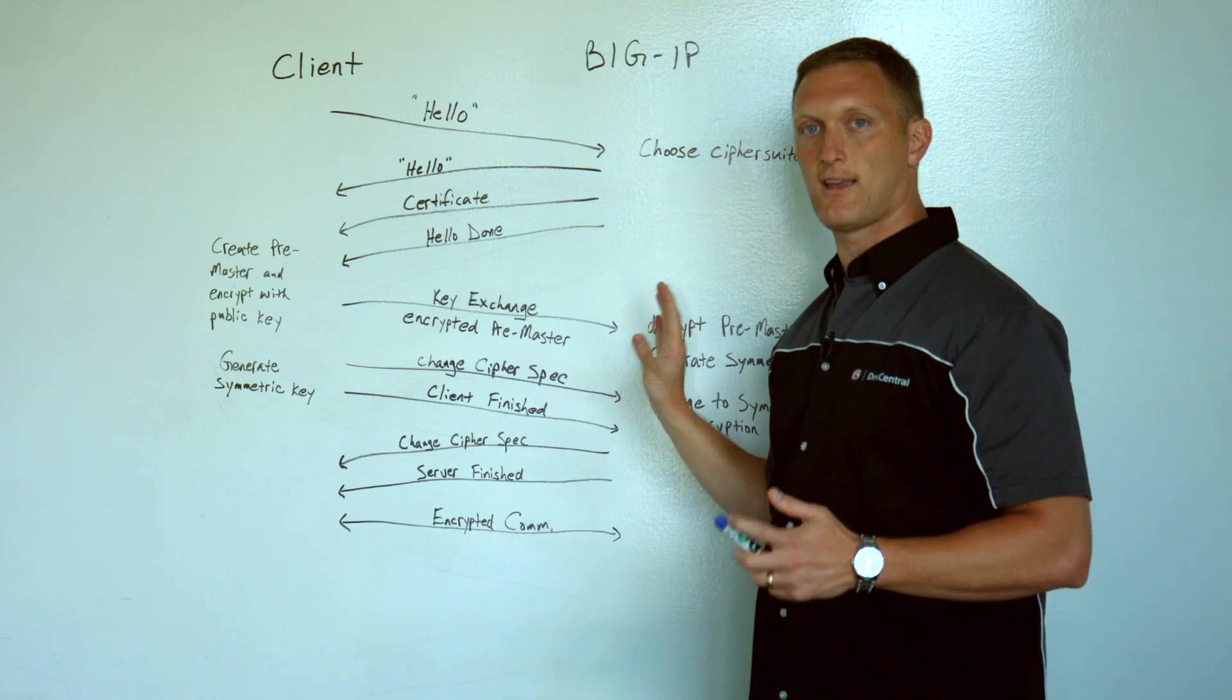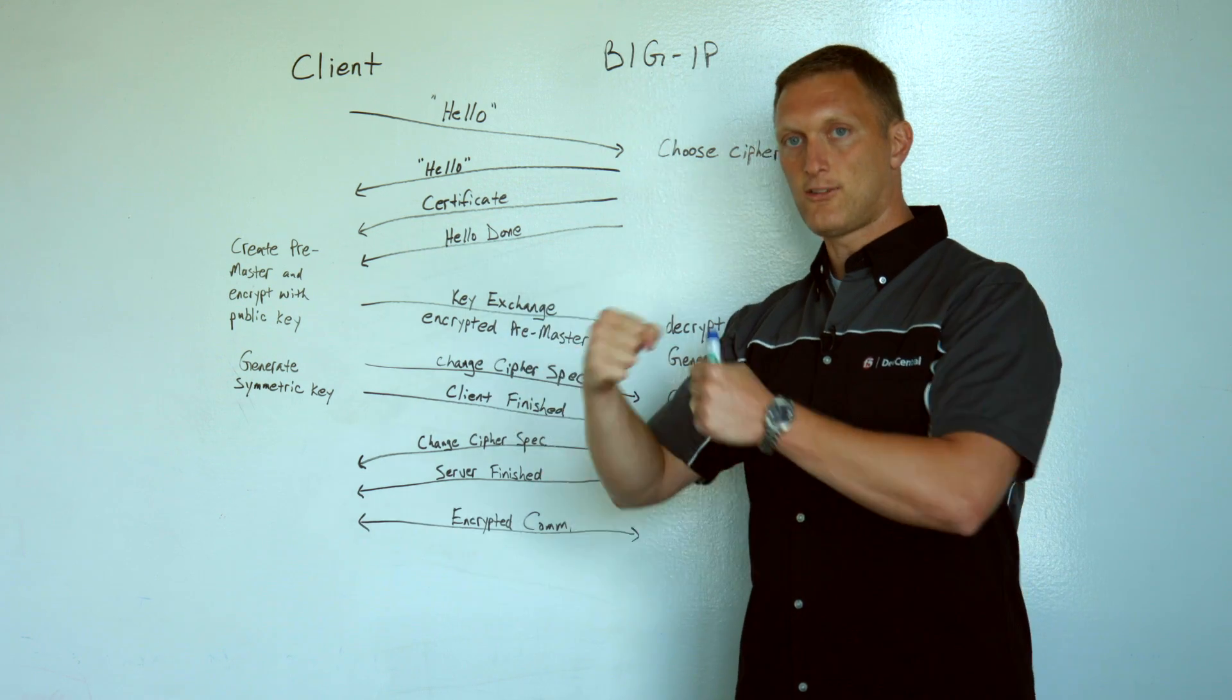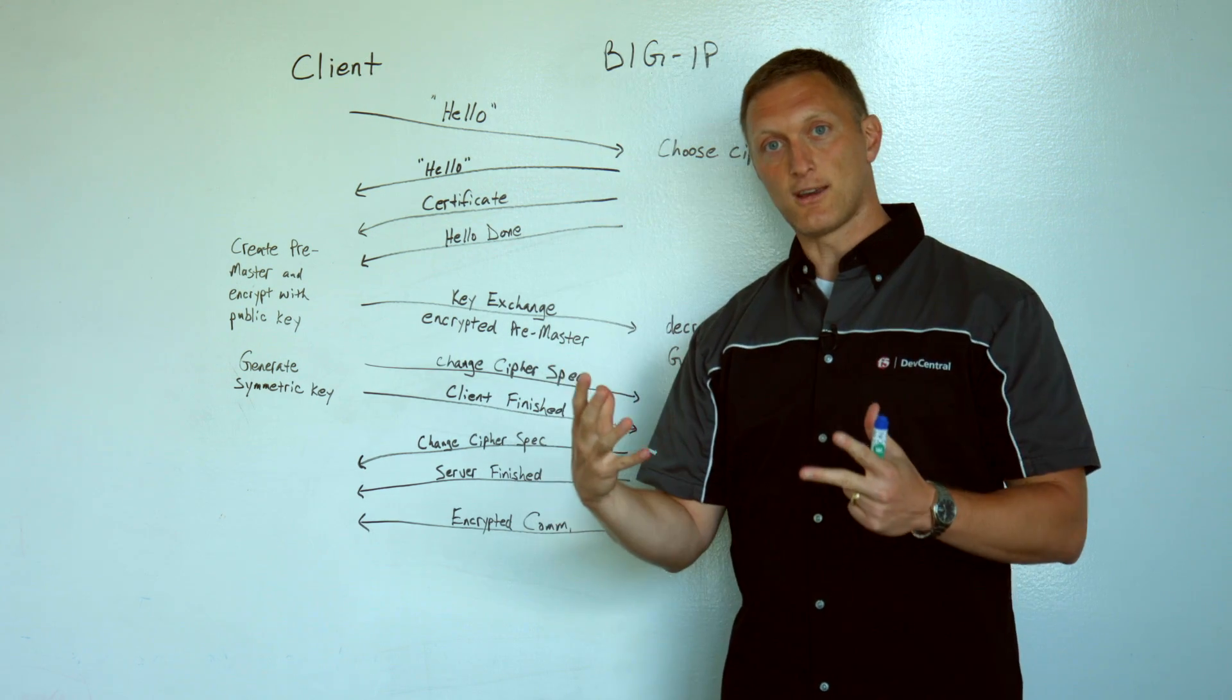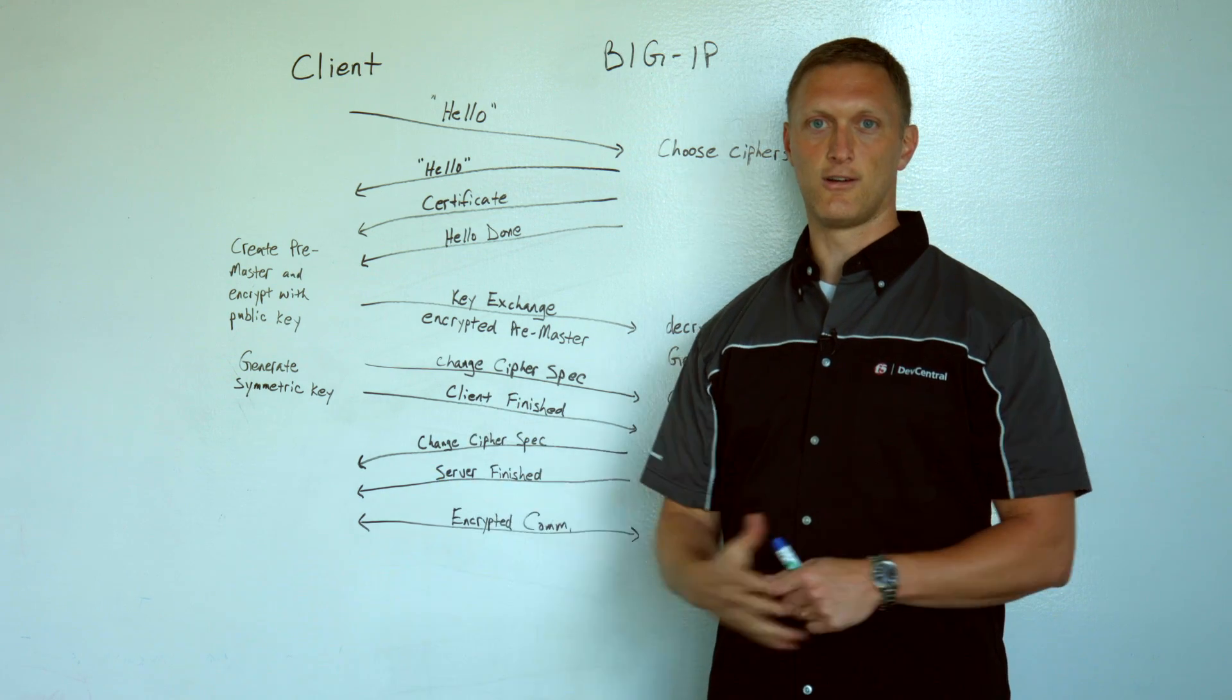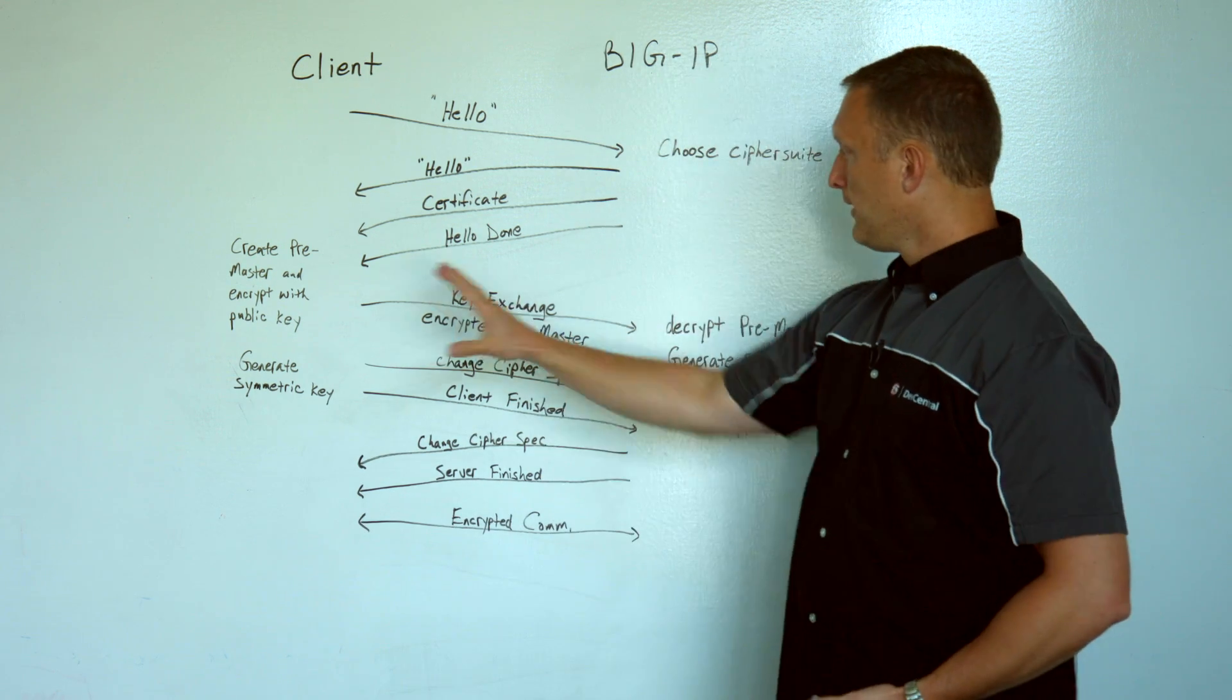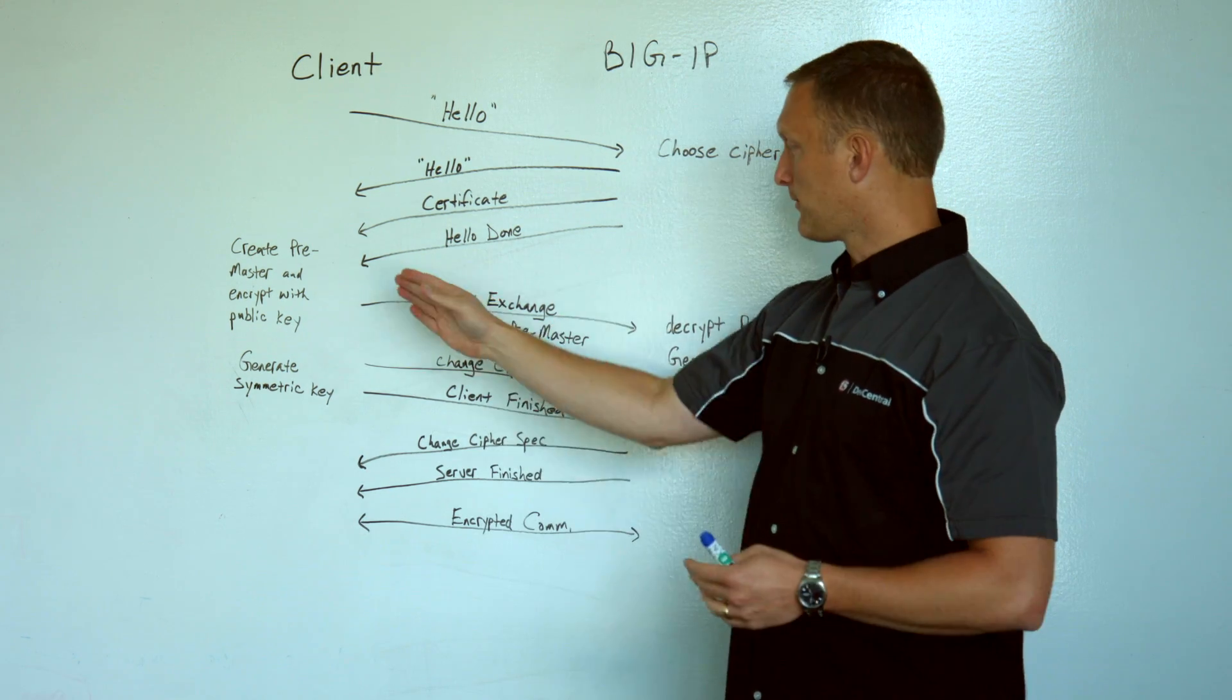What this is designed to do is establish ultimately a shared session key, a shared symmetric key that can be used between the client and the server. The reason you want to establish a symmetric key is because symmetric encryption is significantly faster and more efficient than asymmetric encryption. So ultimately, you want to get to that point where we're using symmetric encryption. But in this portion of it, you have to use the asymmetric because it's a better way to do things in terms of the key exchange.